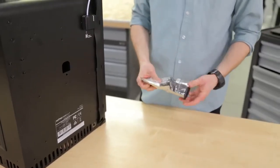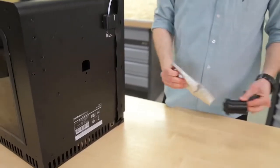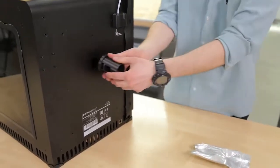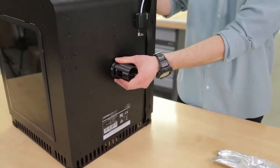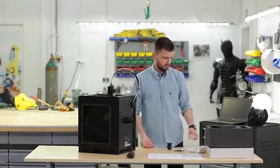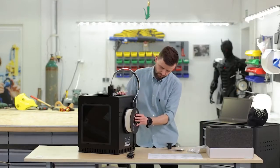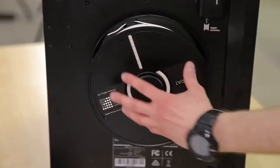Now you can attach the spool holder to the back of the printer. Separate the two parts using the push to open mechanism. Place the spool on the spool holder. It should rotate anti-clockwise. Like this.